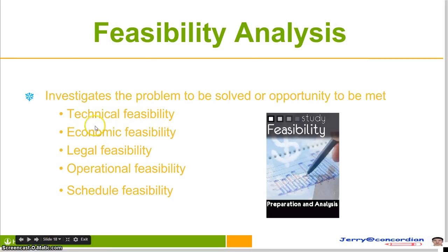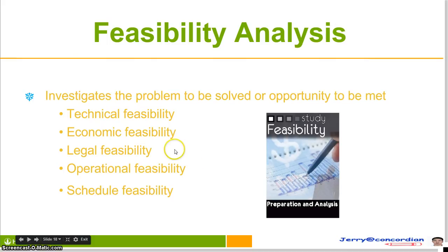You have to remember all five parts. An IB question may look like this: 'Please state the five different parts in a feasibility study.' The answer would be: technical feasibility, economic feasibility, legal feasibility, operational feasibility, and schedule feasibility.